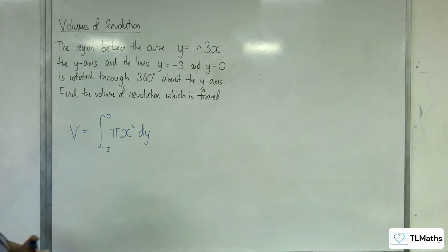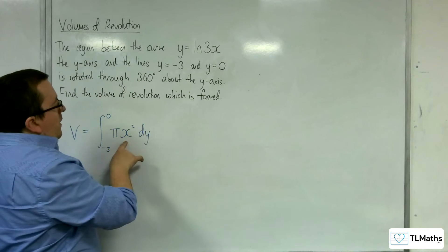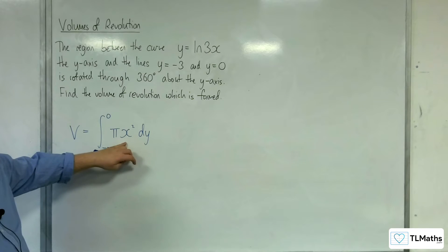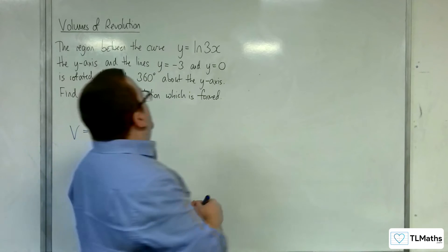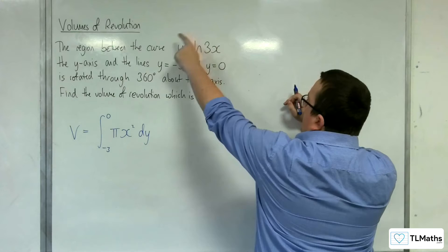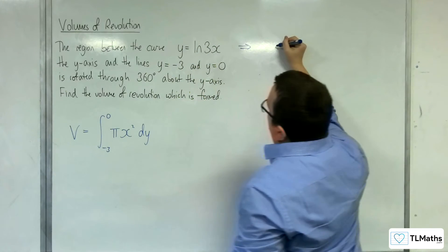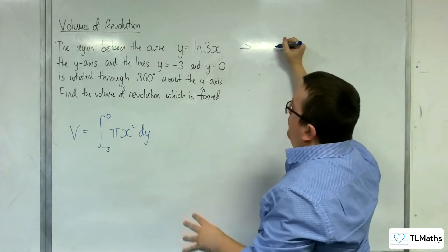Now I need to get some rearrangement of x squared in order to be able to substitute this in to integrate it. So I need to go back to the original curve, y equals log of 3x, and then say to myself, okay, well I need to get x equals.